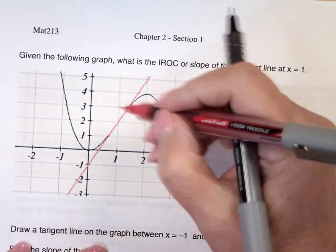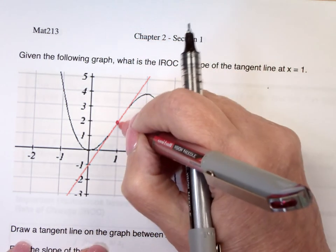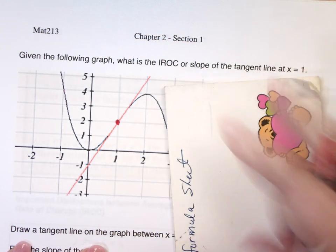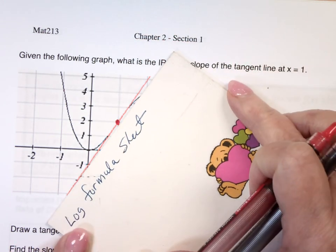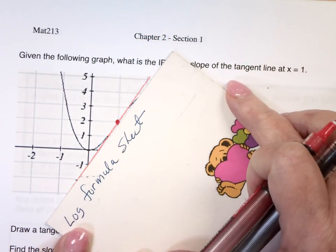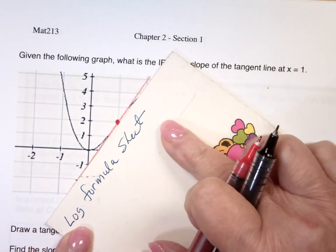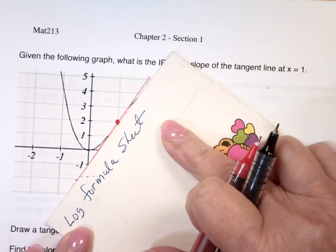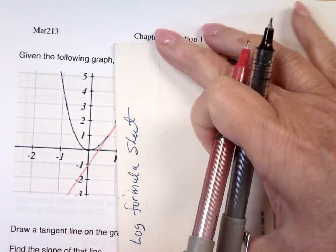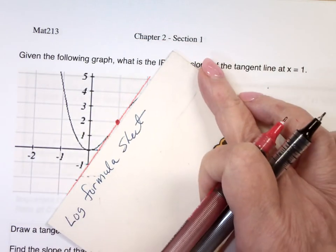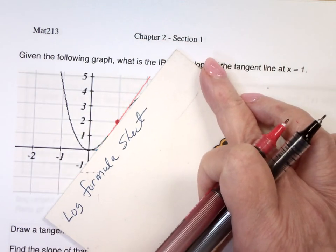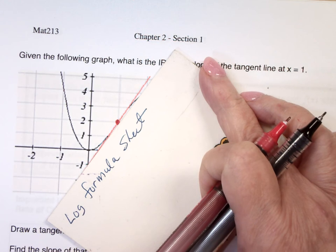Well, the first thing you have to do, here's x equal 1. Then what I do is I, as much as I can, line my straight edge with the graph. I don't go this way, I don't go that way. I try to line it up so it matches the graph as much as possible at x equal 1.